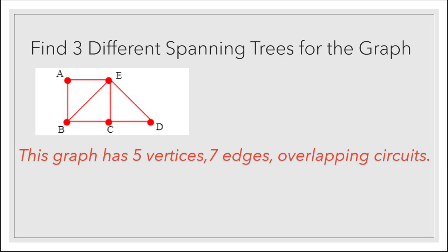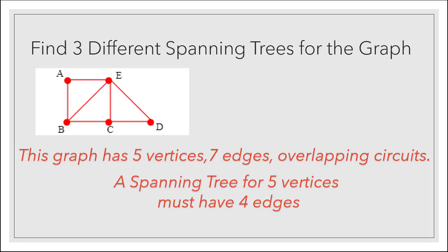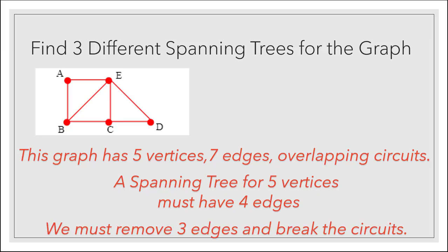Let's find three different spanning trees for this graph. This graph has five vertices, seven edges, and multiple overlapping circuits, which means that it's probably possible to create a lot of spanning trees, but we only have to come up with three different ones. A spanning tree for five vertices has to have four edges. So we're going to remove three of the seven edges and in the process we need to break up any of the circuits that we can.